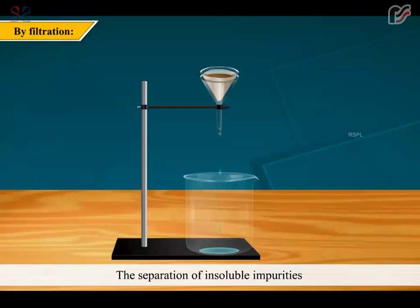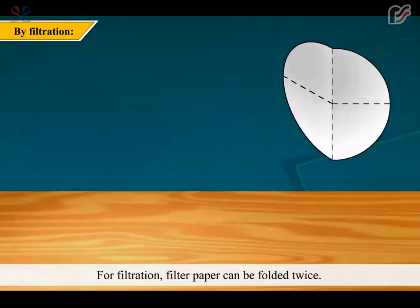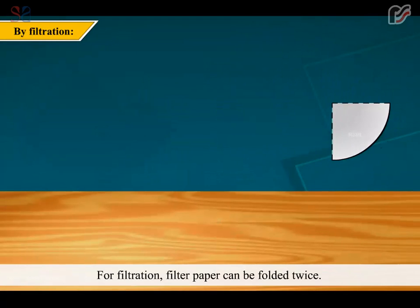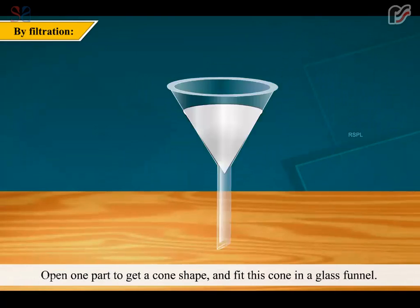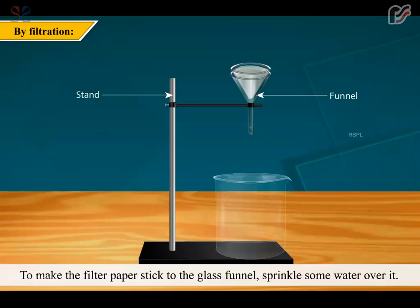The separation of insoluble impurities with the help of filter paper or filtering medium is known as filtration. For filtration, filter paper can be folded twice. Open one part to get a cone shape and fit this cone in a glass funnel. To make the filter paper stick to the glass funnel, sprinkle some water over it.